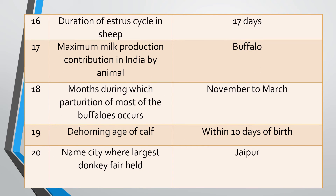Question sixteen: Duration of estrus cycle in sheep. Answer: Duration of estrus cycle in sheep is 17 days. Question seventeen: Maximum milk production contribution in India is by which domestic animal? Answer: Buffalo contributes maximum milk production in India.